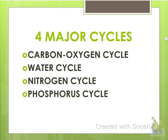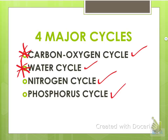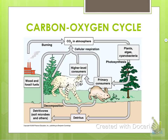There are four major cycles: the carbon-oxygen cycle, the water cycle, the nitrogen cycle, and the phosphorus cycle. Hopefully the water cycle is one you know the most about — just review. The carbon-oxygen cycle talks about photosynthesis and cell respiration, so that should also be review. First up is the carbon-oxygen cycle, sometimes just called the carbon cycle.